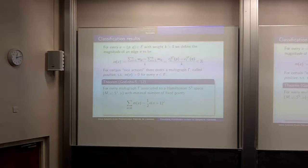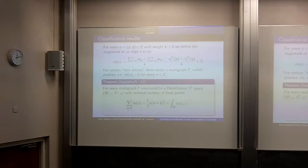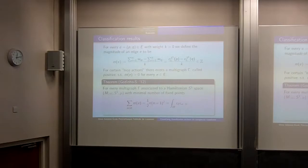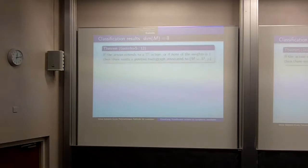In order to have finitely many partitions, I need all M_E to be positive. The formula ∑M_E = ∫_M c₁c_{n-1} was a great discovery — the day we found it was one of those days you go home happy to do research, averaged against the previous four months of being stuck. We also proved that if the action extends to a T² action, or if none of the weights is 1, then a positive multigraph exists. And in the 8-dimensional case, the only multigraph that can arise is precisely the complete graph on 5 vertices, with every triangle having its longest edge labeled by the sum of the two shorter edge labels.